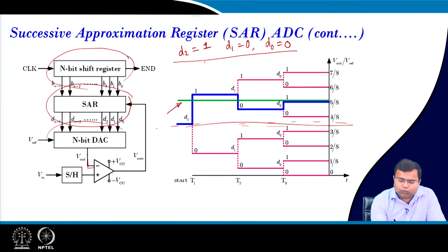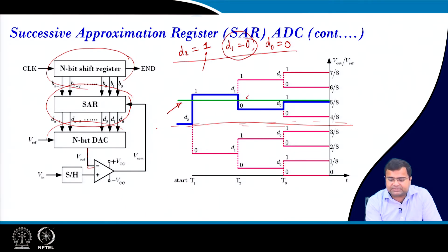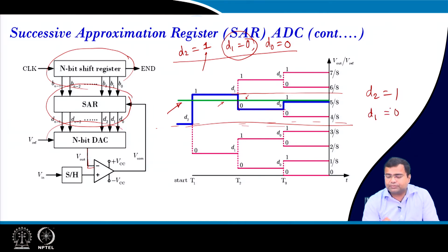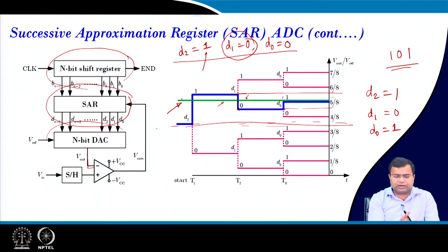Since the analog voltage (shown in green) is above 50% of the voltage set by D2=1, D1=0, D0=0, the first bit D2 is finalized as 1. Then the next bit: since the voltage is still higher, it looks at the next 50% window. If the analog voltage is below that level, D1 is set to 0. Then for D0, the analog voltage is above the next 50% threshold, so D0 becomes 1. The result is the digital value 1-0-1 corresponding to the analog signal.